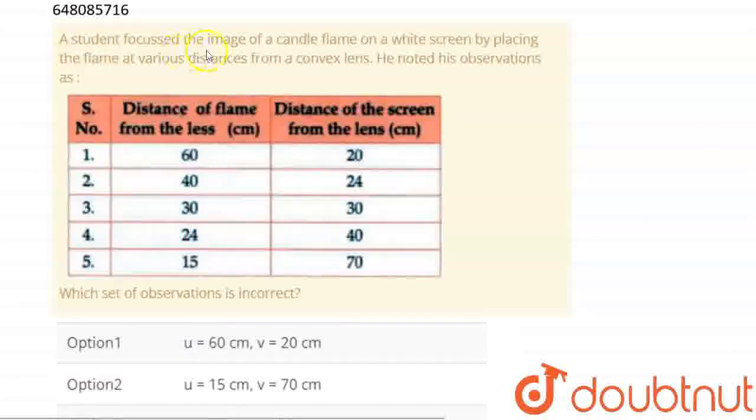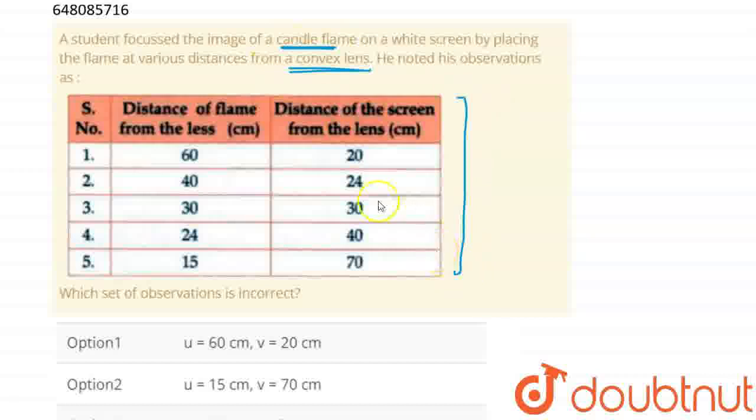Question is given. A student focused the image of a candle flame on a white screen by placing the flame at various distances from a convex lens. He noted his observations showing image distance versus object distance in an observation table.